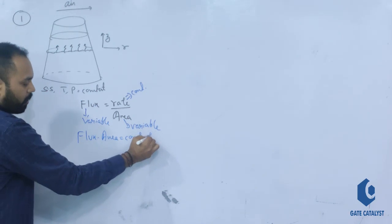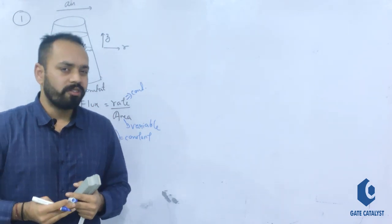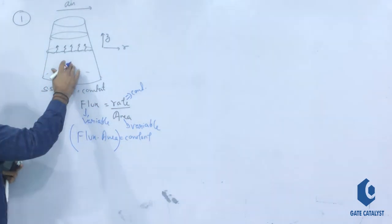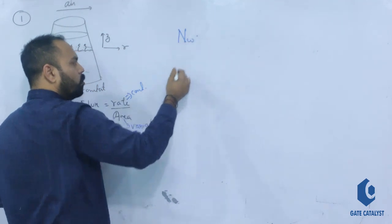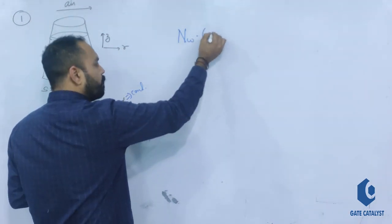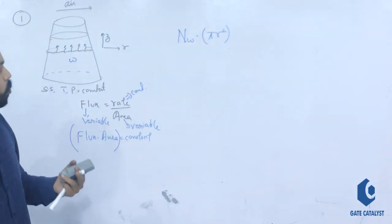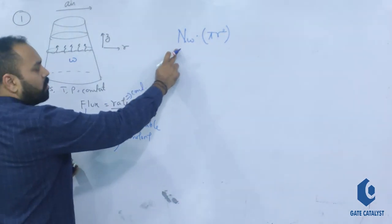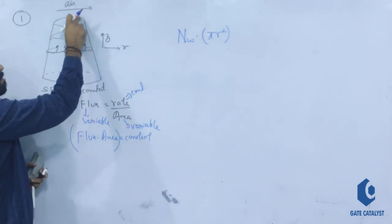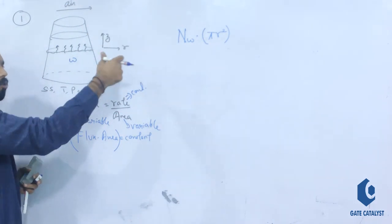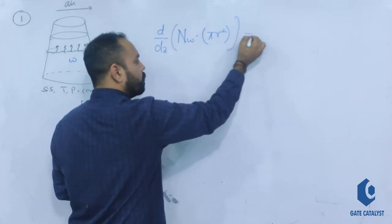Whenever you solve a problem of variable area diffusion, remember that flux times area is always constant. What is evaporating here? Water — let us denote the water species by W, so flux is N_W. The cross-section area is π R². Since flux times area is constant, d/dZ of (N_W × π R²) = 0.